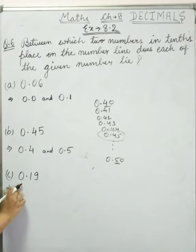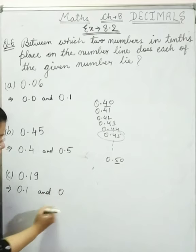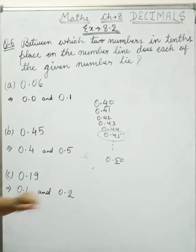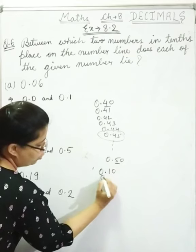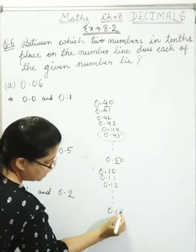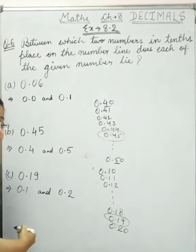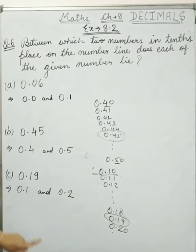Now next is c: 0.19. If we look at the 10th place, the digit is 1, meaning this is 0.1. And the next is 2, so 0.2. If we put both as 0.10 and 0.20, then: 0.10, 0.11, 0.12... 0.18, 0.19, and 0.20. So 0.19 lies between 0.1 and 0.2.